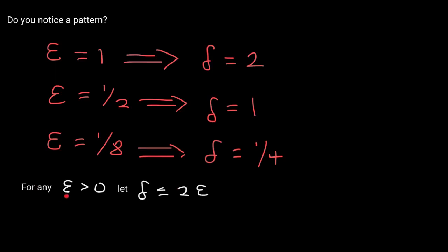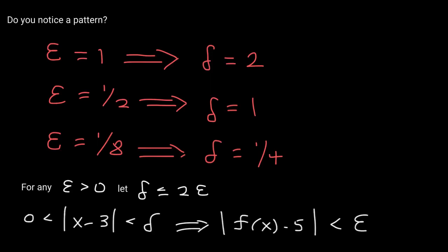For any positive value called epsilon given, all we have to do is say: if you want to be within this many units from your limit, then let delta be less than or equal to twice that epsilon value. In mathematical notation: if the distance between x and 3 is less than delta, then the distance between your function values and 5 will be less than epsilon.